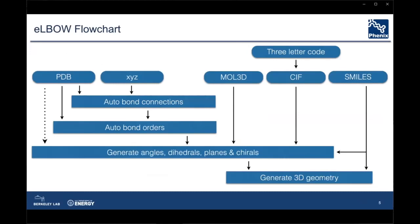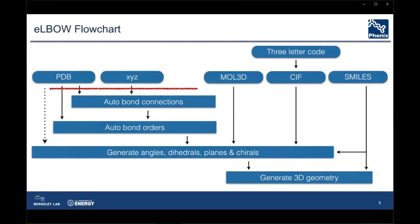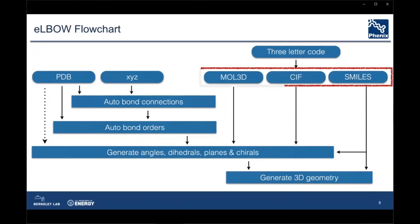Not all chemical inputs are created equal. PDB and XYZ formats on the left generally lack connection information, so extra steps of bond detection and bond order determination can be required. The only acceptable PDB is one containing both hydrogen atoms and bond CONNECT records. An additional use of the PDB is that it contains atom names. The three formats on the right are examples that contain useful bonding information.